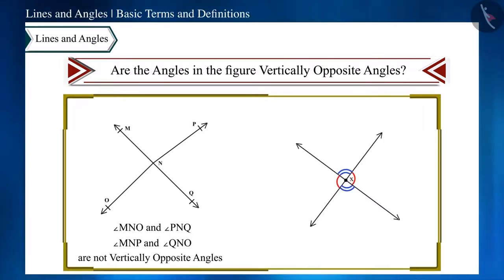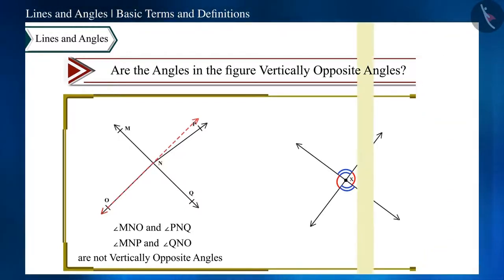Look at the figure carefully. Here, two lines are not intersecting each other. These are two rays, ray PN and ray NO, which arise from the point N. The position of these two rays is such that we are not getting PN as a straight line. Therefore, these angles will not be vertically opposite angles.